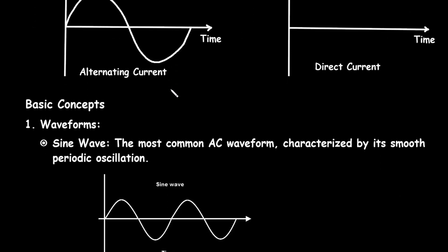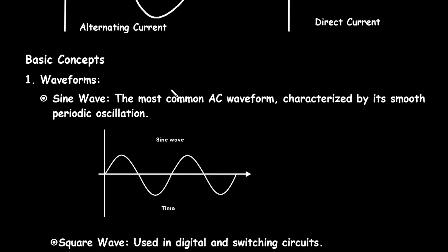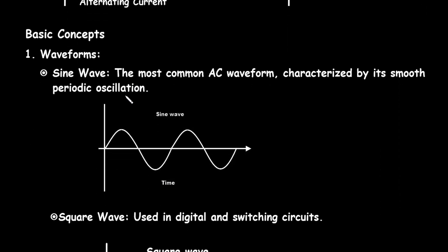Let's see the basic concepts. Waveforms: Sine wave — the most common AC waveform, characterized by its smooth periodic oscillations. As we can see here, this is a sine wave.